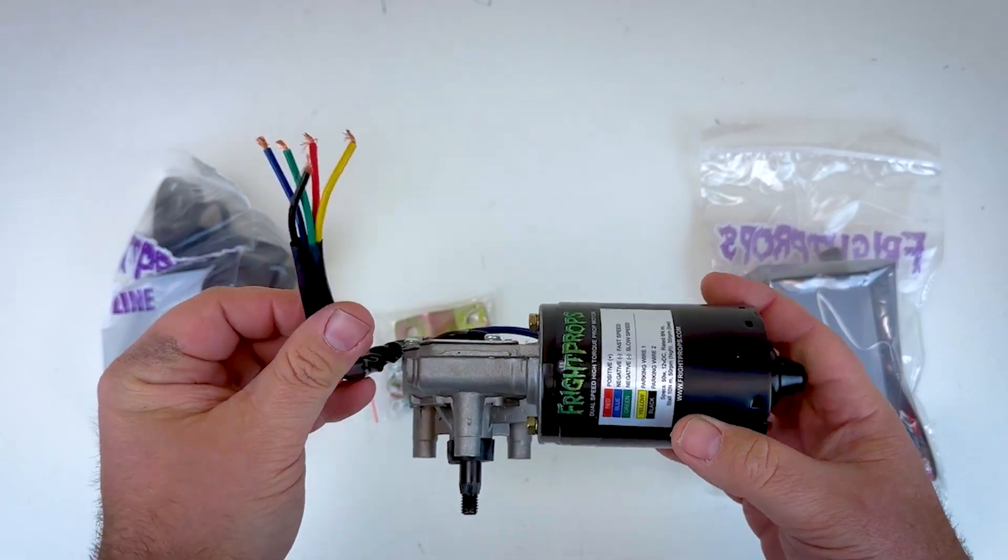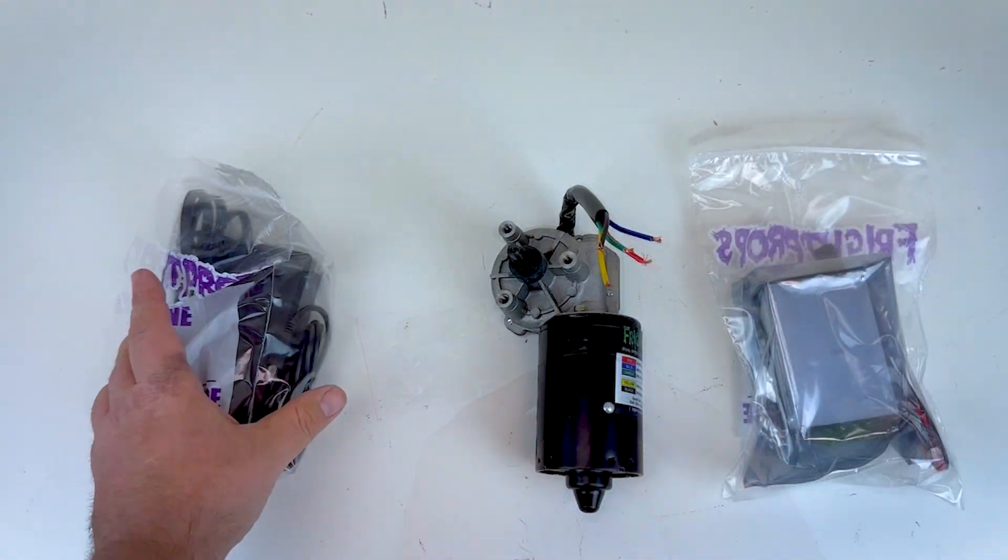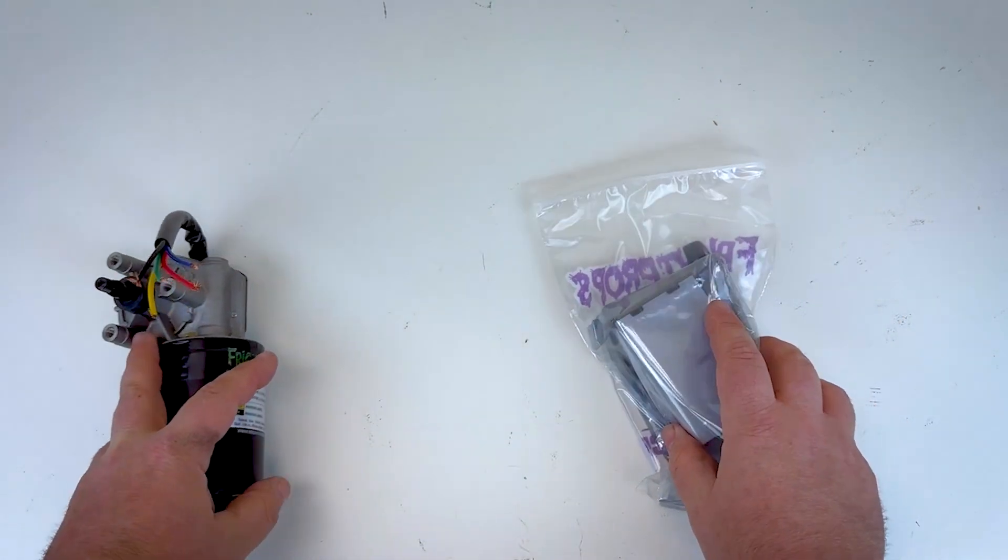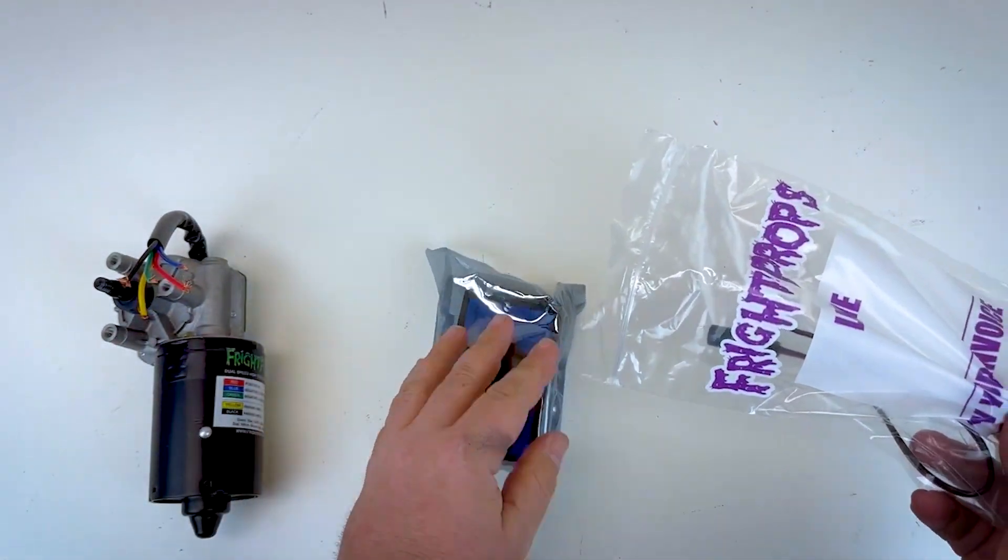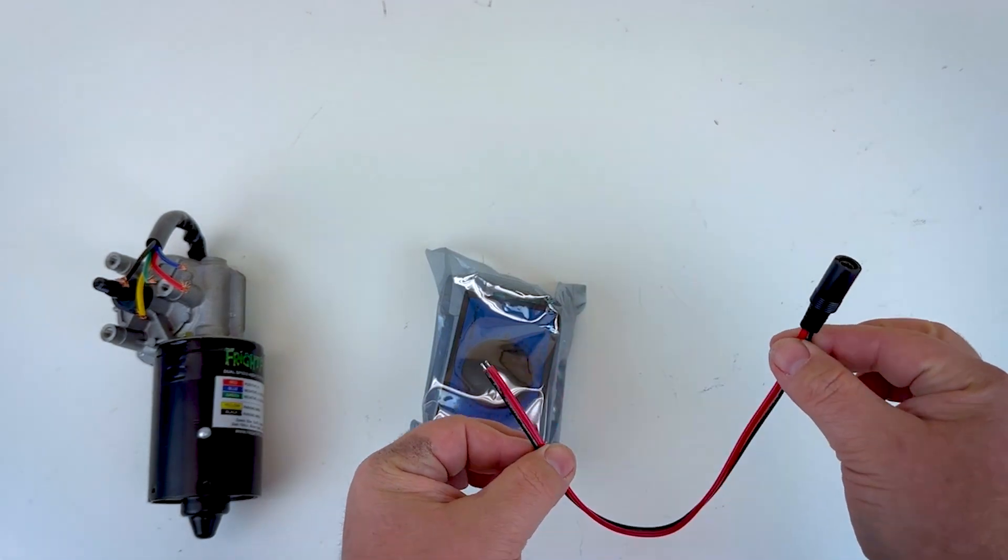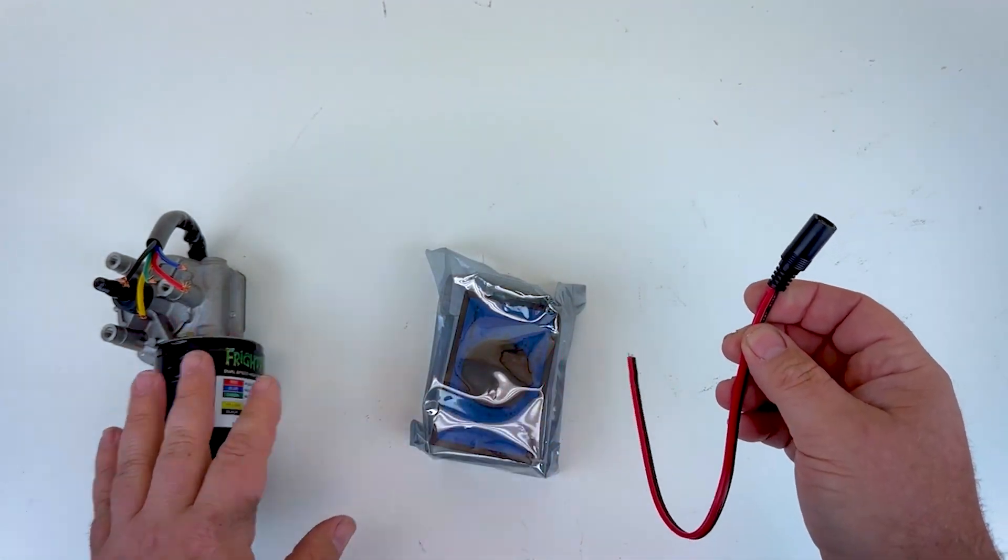All right so let's go ahead and wire this up to the speed controller and show you how it works. We'll set the power supply aside for a moment here and open up our speed controller. This female power supply adapter is included. It's going to help us wire the motor to the speed controller.